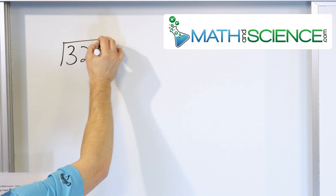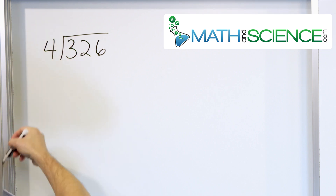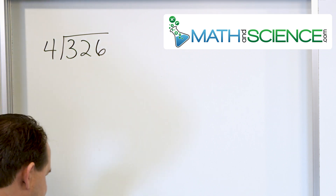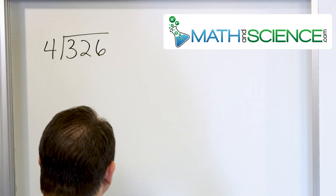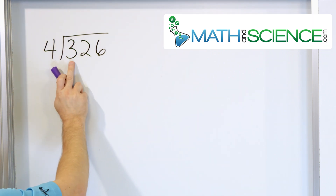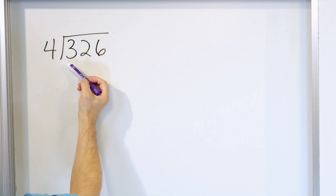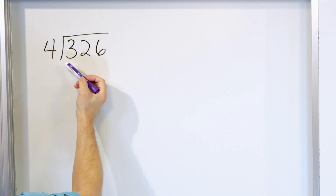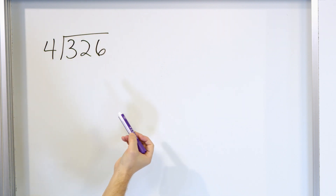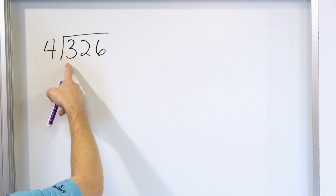We have 326 and we're going to divide that by 4. I'd like you to try to divide 4 into 3 first. But since 4 times 1 is 4 and that's already too big, I can't divide into 3.